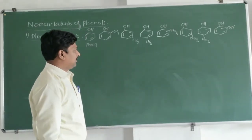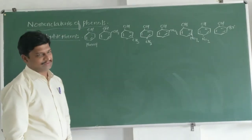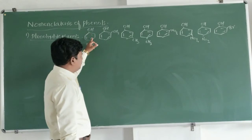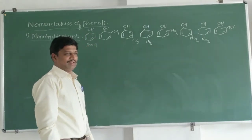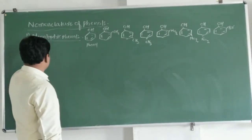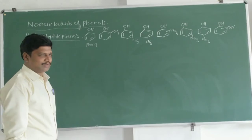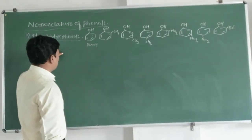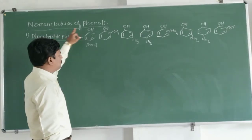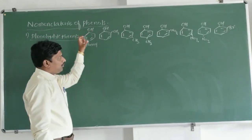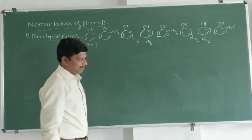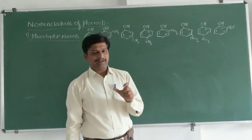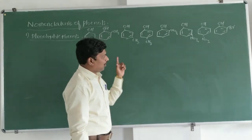As we observed in the previous video, these structures are called monohydric phenols because they contain only one OH group on the benzene ring. MONO means one, and HYDRIC refers to the OH group. So here only one OH group is present on the benzene ring — that is why all these are monohydric phenols. They are phenols because the OH group is directly attached to the benzene ring.